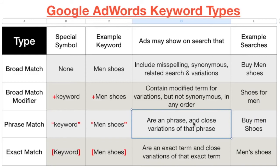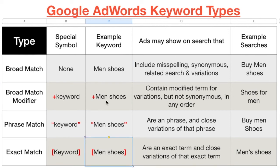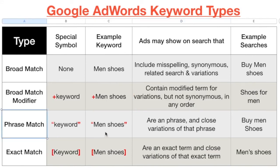With phrase match, you can add words before or after 'man shoes' and the ad will still show, as long as the phrase 'man shoes' appears in that exact form. So 'buy man shoes online' would trigger it, but reversing to 'shoes man' would not. The core phrase must be included and in order.